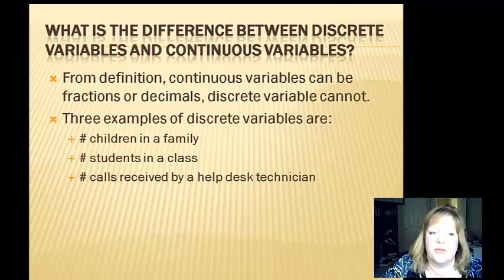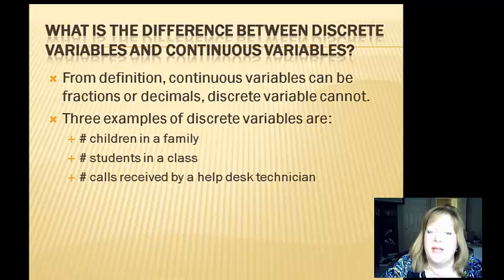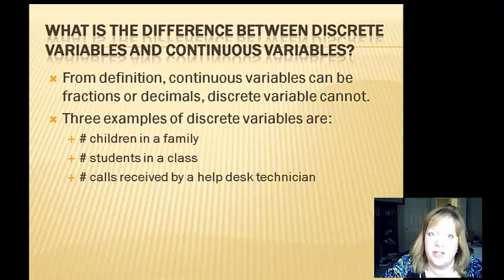Three examples of discrete variables are: the number of children in your family, the number of students in a class, and the number of calls received by a help desk technician. Those are all countable — they're counting something up and they're all whole numbers.